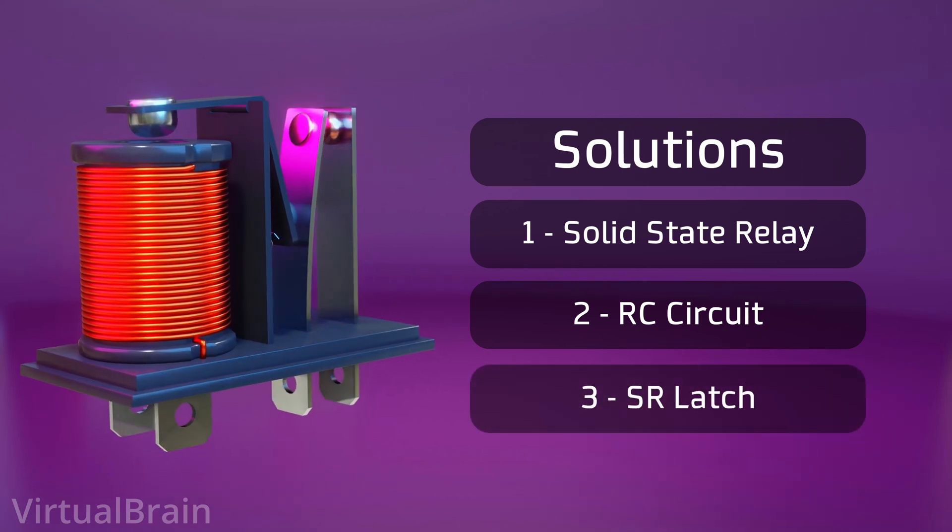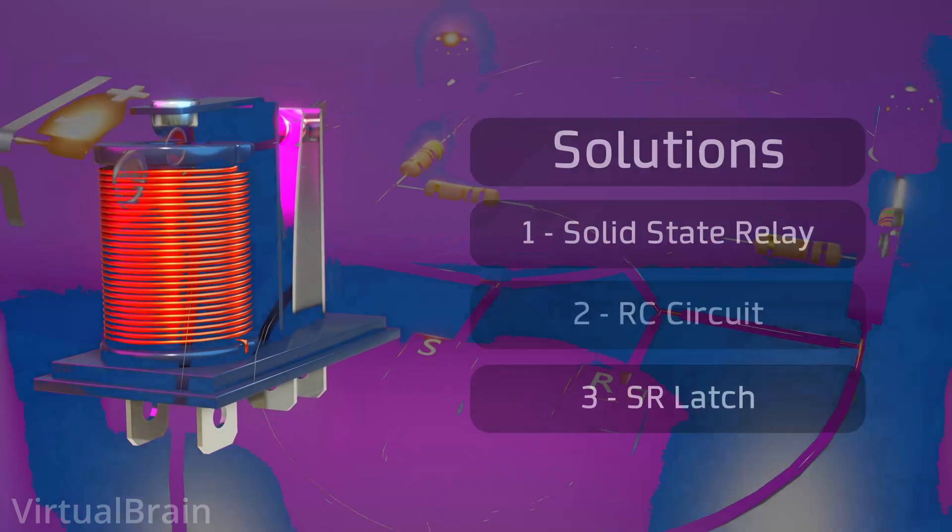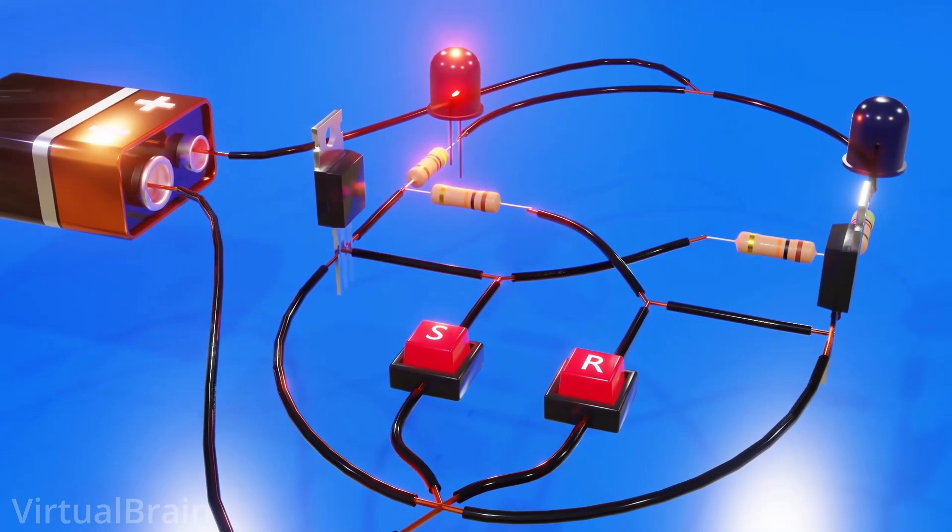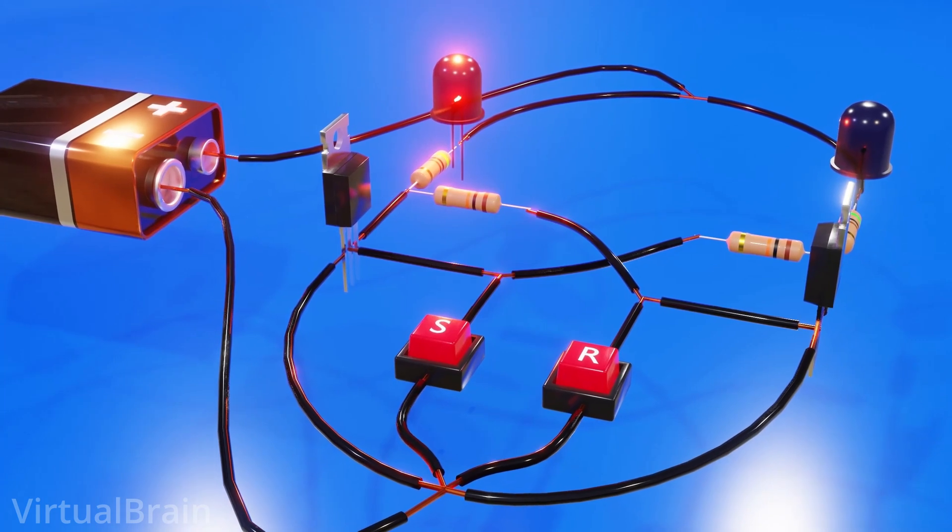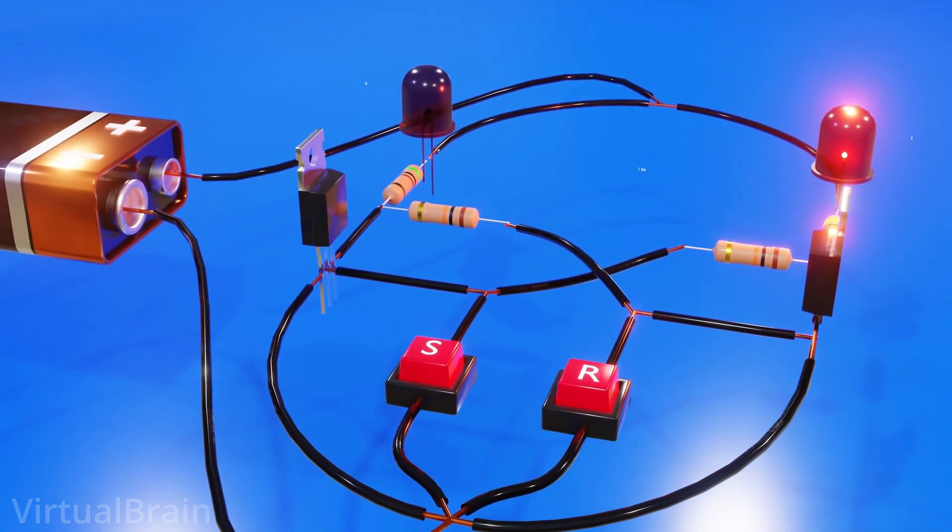In addition, for the particular case of the rebound effect we can also use an SR latch, a circuit that as we saw in a previous video is able to switch between two stable states to receive a signal at one of its terminals.